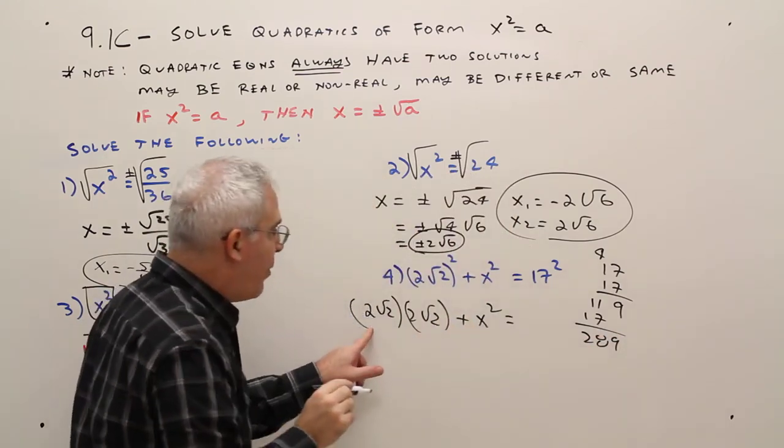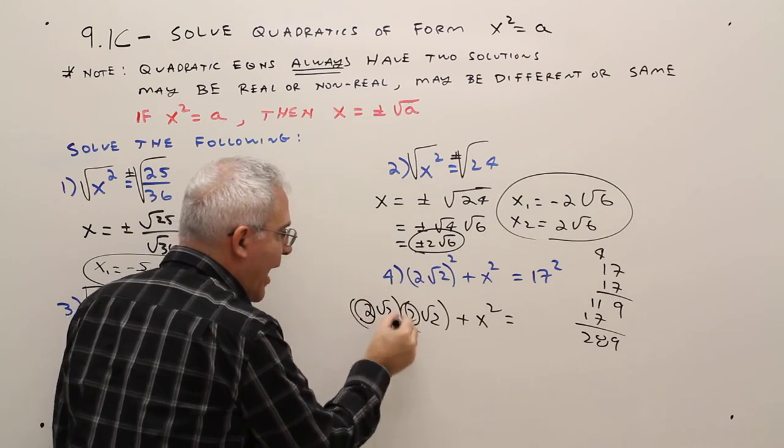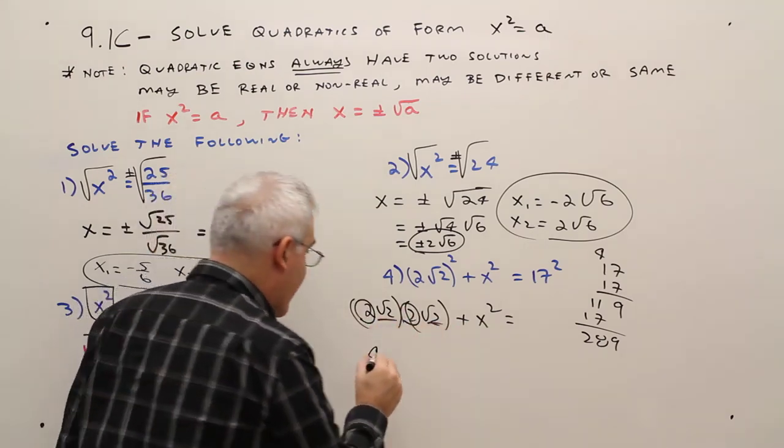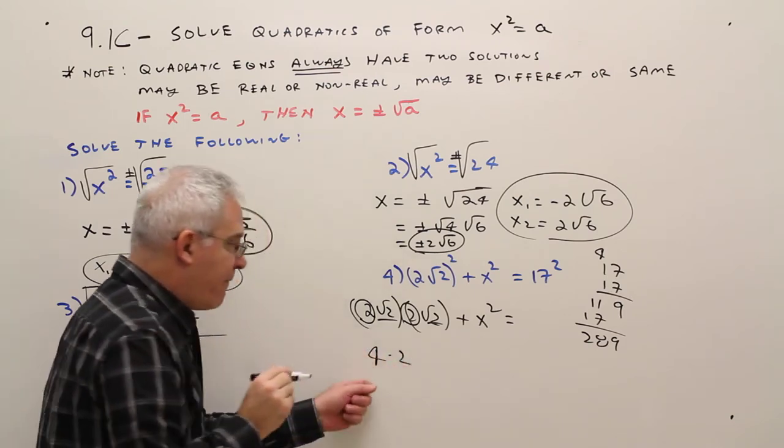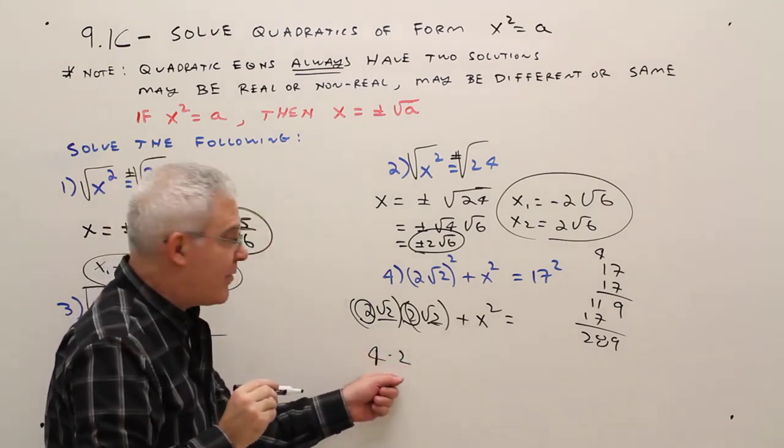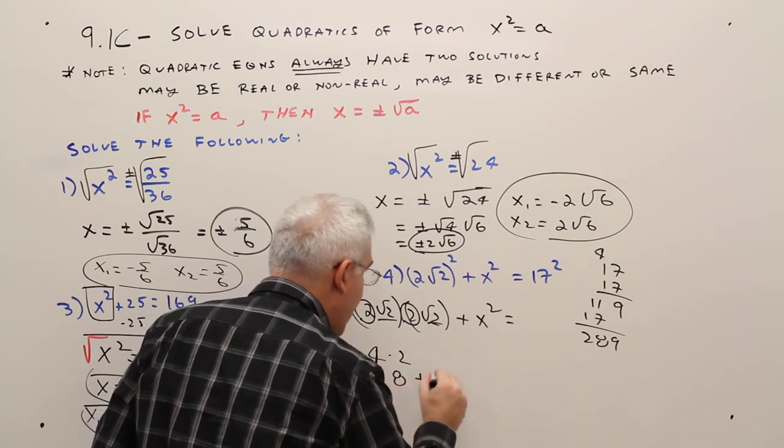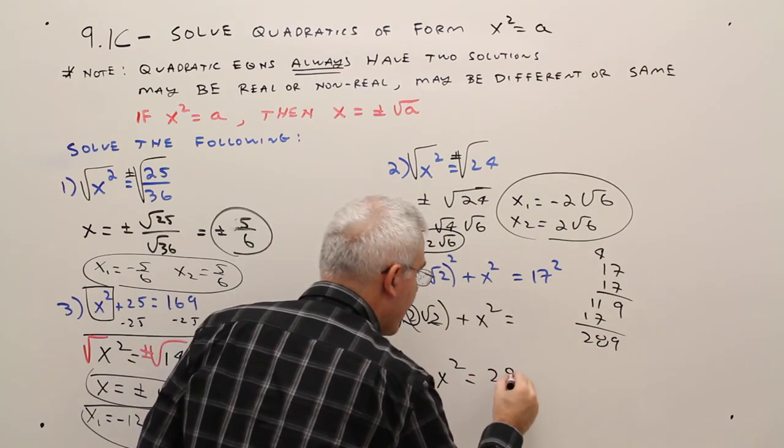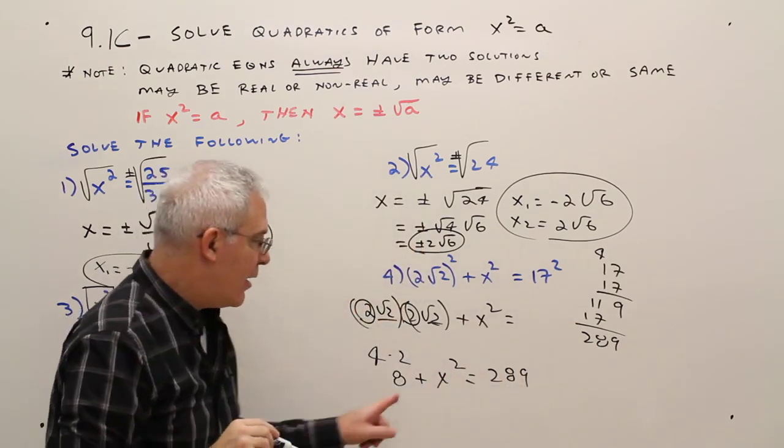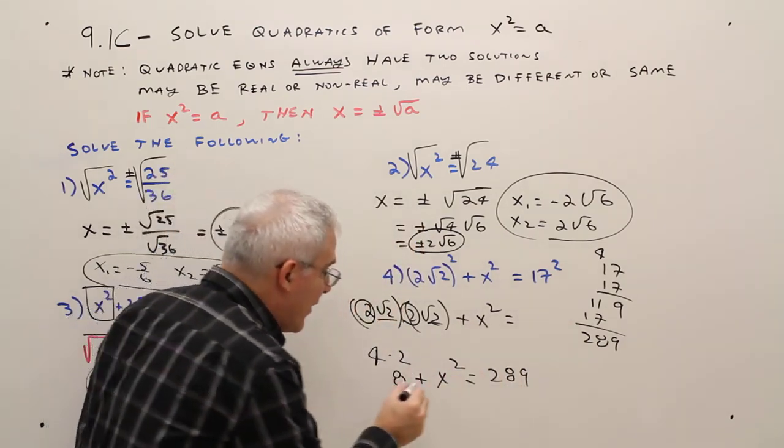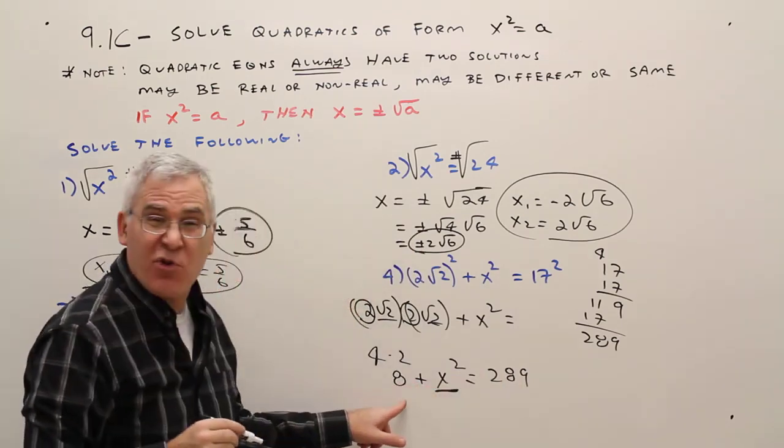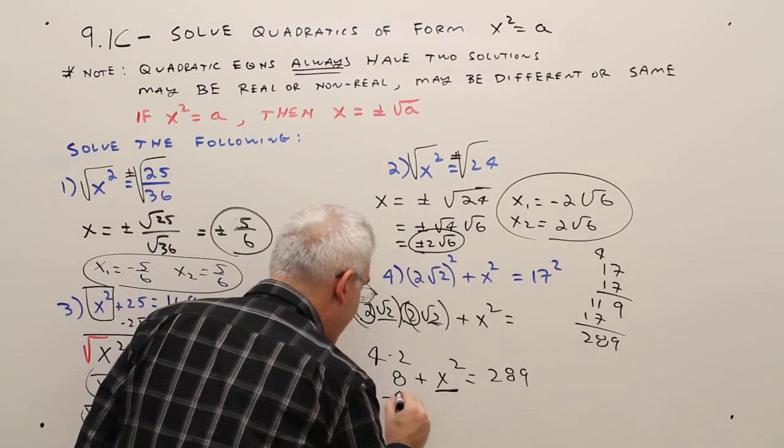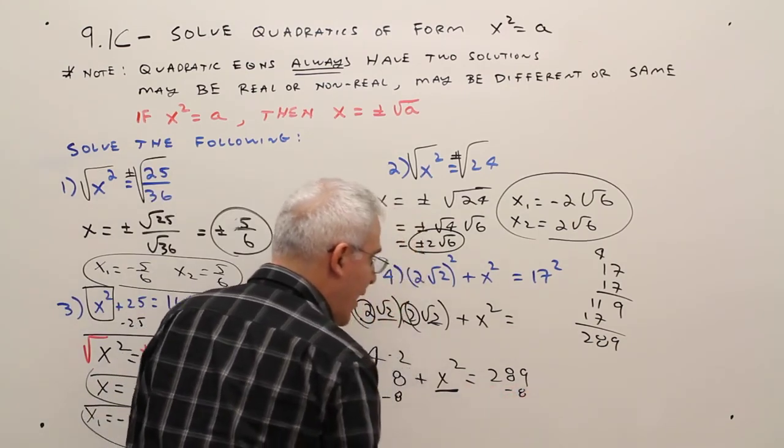So I'll multiply this out: 2 by 2 is 4, radical 2 by radical 2 is 2, and 4 by 2 is 8. So I'm going to get 8 plus X squared equals 289. Remember, I'm going to isolate this X squared term, so I'm going to subtract 8 from each side.